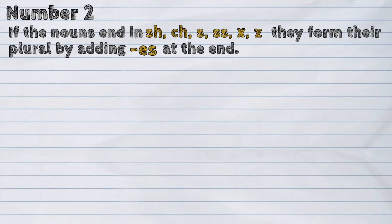Number two. If the nouns end in sh, ch, s, ss, x, or z, they form their plural by adding 'es' at the end.